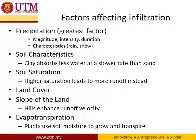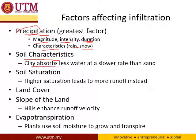There are many factors affecting infiltration. The source is precipitation — its magnitude, intensity, and duration. For example, 100 mm of rainfall in one hour has a greater intensity than 20 mm per hour. The type of precipitation — rain or snow — also affects infiltration rate. Soil characteristics matter too: clay absorbs less water at a slower rate than sand. Higher soil saturation leads to more runoff because the soil is already saturated, so water cannot infiltrate anymore. The type of land cover — soil type, plants, roots, bushes, grass — will also affect infiltration. Slope of land affects infiltration too — hills enhance runoff velocity, so steep slopes may slow the infiltration rate.